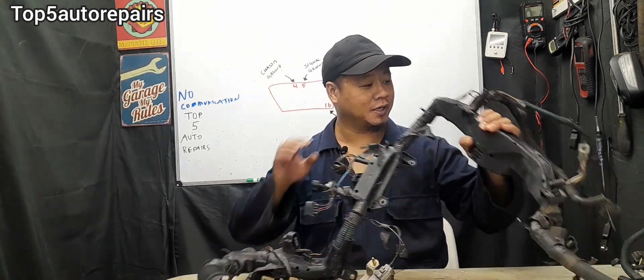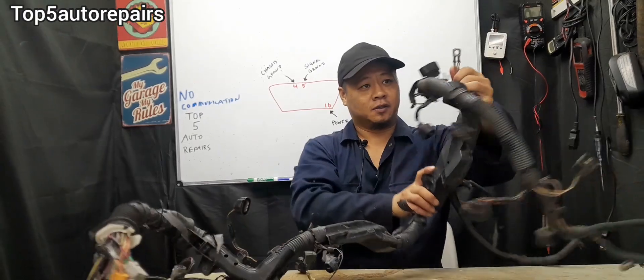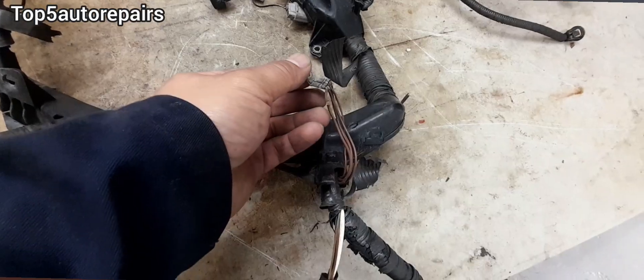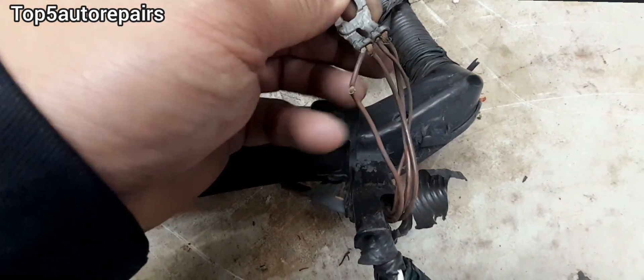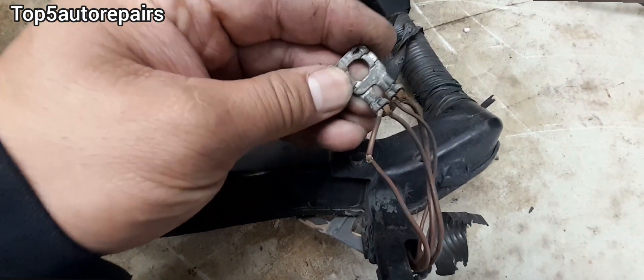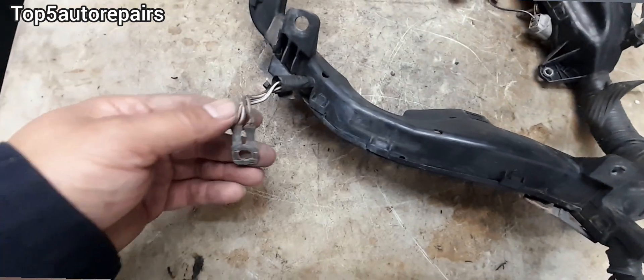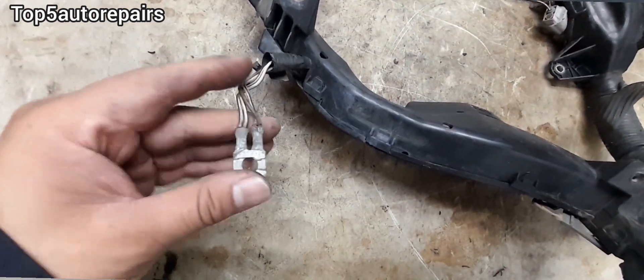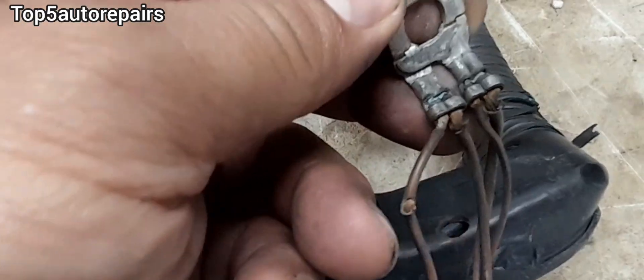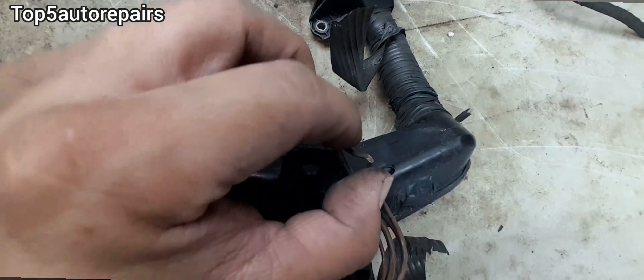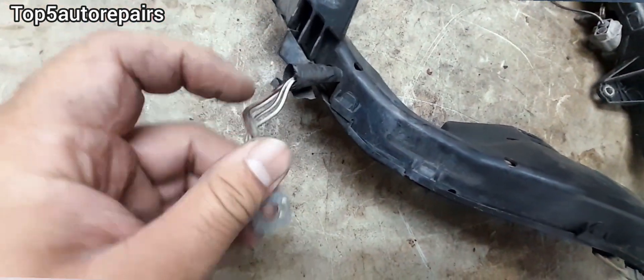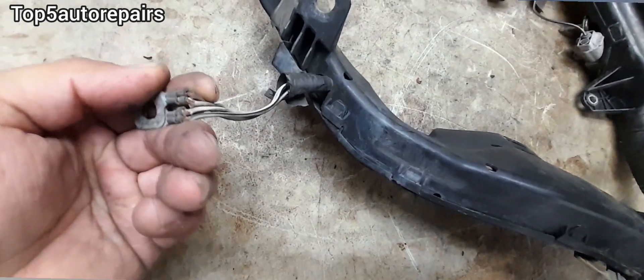So the first thing I always check is the computer ground. It is very easy to identify — you're going to see a series of wires going to one connection, and here's another series of wires going to another connection. If the computer ground is completely rusted or the wire is broken, this can definitely cause a communication issue.